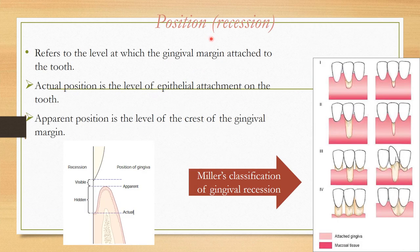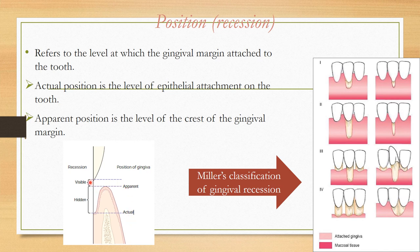Position refers to the level at which the gingival margin is attached to the tooth. When the gingival margin moves apically, it exposes tooth surface — this is called gingival recession. Recession classification follows Miller's classification historically, and now the 2017 recession classification: Recession Types 1, 2, and 3. Recession can be classified as visible or hidden, and as apparent or actual. Actual position is from the level of epithelial attachment to the tooth; apparent is the level of the crest of the gingival margin.